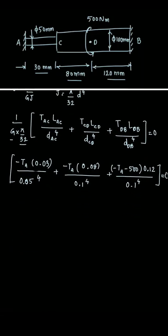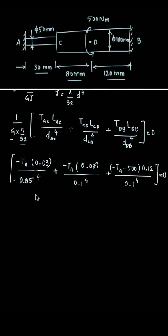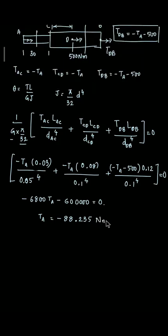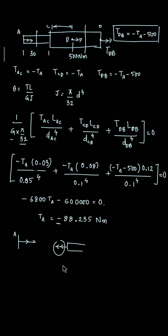Simplifying the equation yields: −6800 TA minus approximately 600,000 equals zero. Solving this, TA equals minus 88.235 Nm. Since we got a negative value, the actual direction of TA is opposite to the assumed direction. The torque at A is 88.235 Nm in the reversed direction.